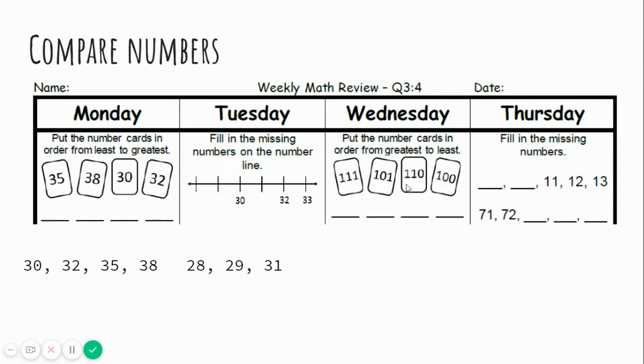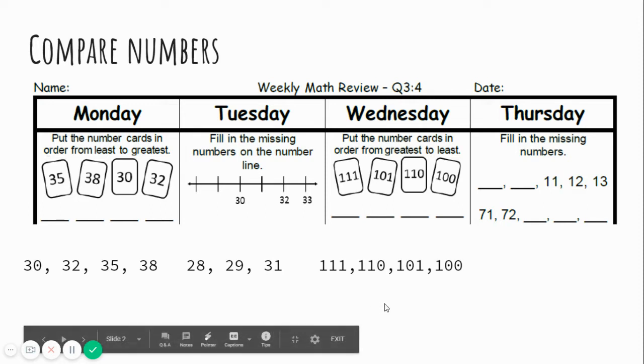Now let's look at the ones place. We have 2 in the tens place, so let's look at the ones place. There's a 1, and there's a 0. 1 is greater than 0, so 111 would be first. Then 110, then 101, then 100. Great job.